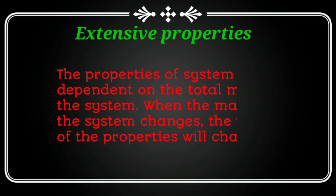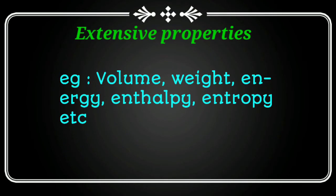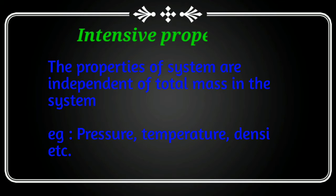So extensive properties in thermodynamics — system properties that are dependent on the total mass of the system are called extensive properties. Properties that are independent of the system are called intensive properties. Examples of intensive properties include pressure, temperature, and density.